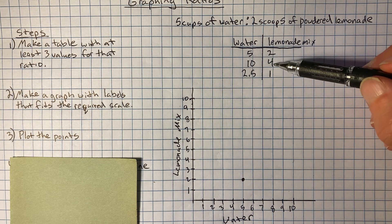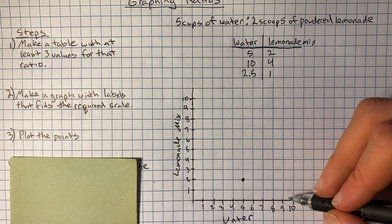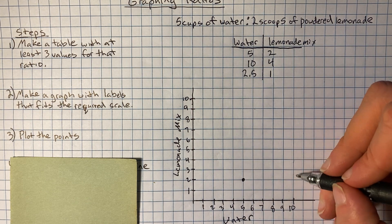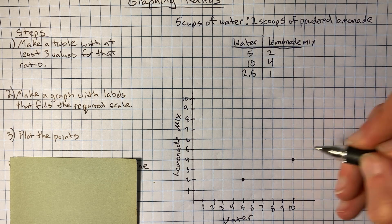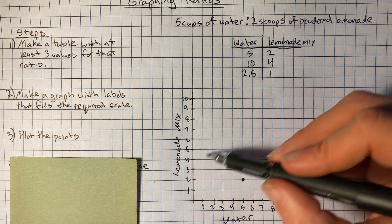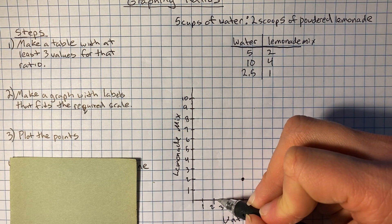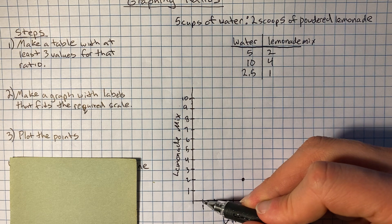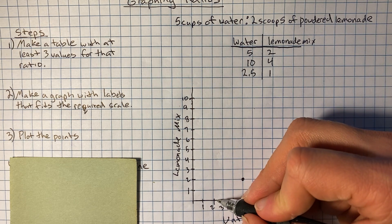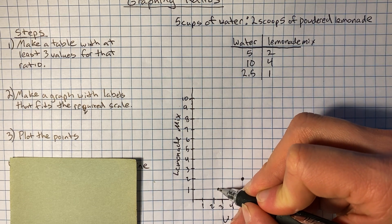And now let's see another one. If we had 10 water, that would be 4 lemonade. So I'm going to go over to 10 water, my x, and then I'm going to go up to 4 lemonade. And my last one, if I had 2 and a half water, 2.5 water, that's 1 lemonade. So I'm going to go to 2 and a half. Remember when you're graphing, you always count on the line. So 1, 2 and a half, and then it goes up 1 right here.